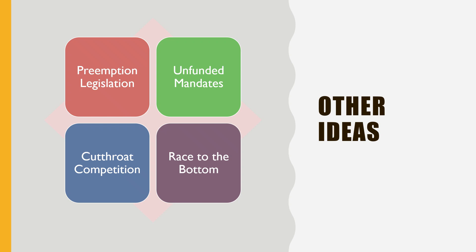You should look at these four ideas — preemption legislation, unfunded mandates, cutthroat competition, and race to the bottom — and expect quiz and exam questions on them. As we carry on through the rest of the semester, pay particular attention to federalism and how it affects the national government and the state governments in the areas of the different branches of government, civil rights, civil liberties, and even elections. This is an important concept for us going forward.